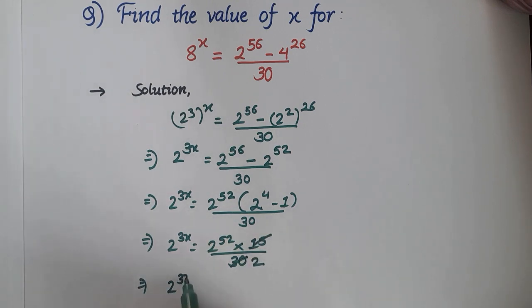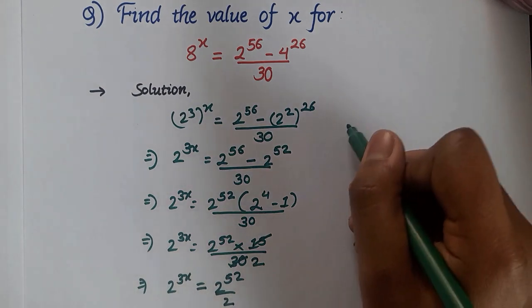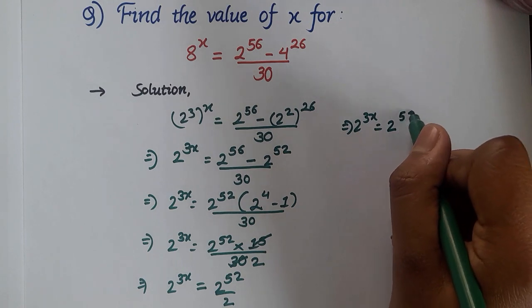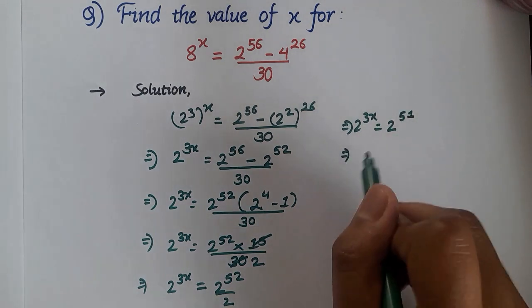Now this will give us 2^(3x) is equal to 2^52 over 2. So from here we can say that 2^(3x) will be equal to 2^51.